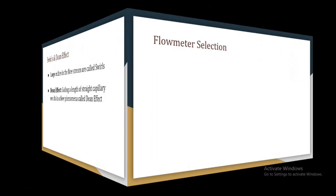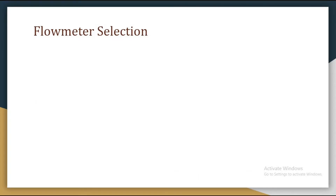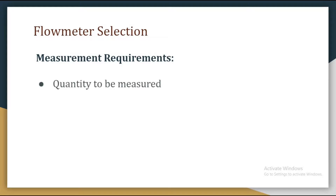The next very important topic is flow meter selection. There are a few points we need to keep in mind while selecting a flow meter. The first is measurement requirements — we need to be familiar with the quantity to be measured, whether it is point velocity, average velocity, volumetric rate, or something else.